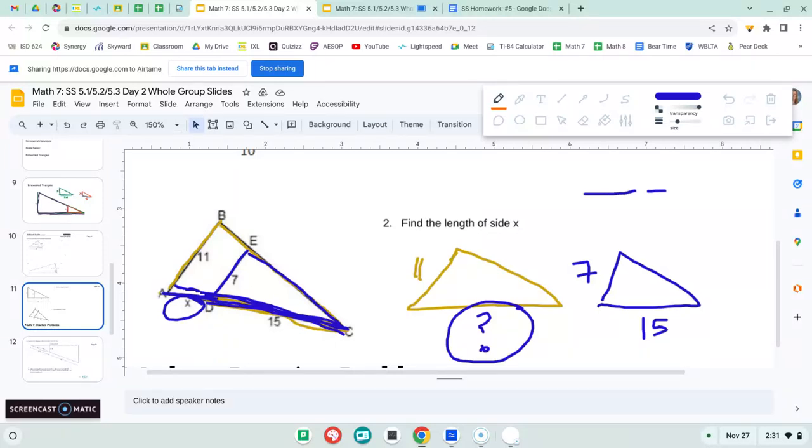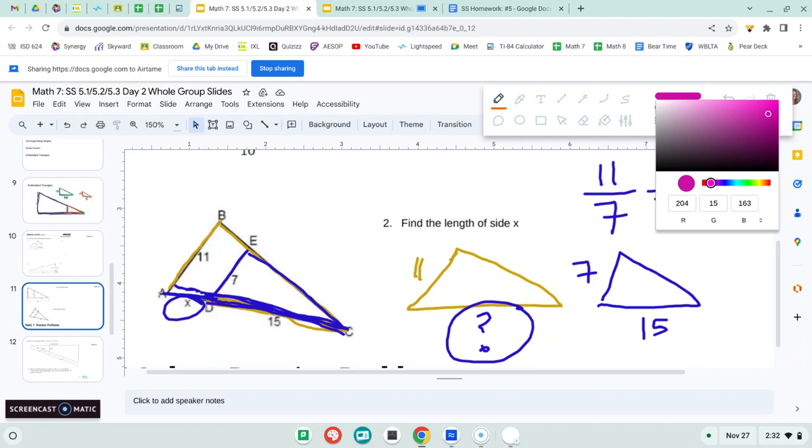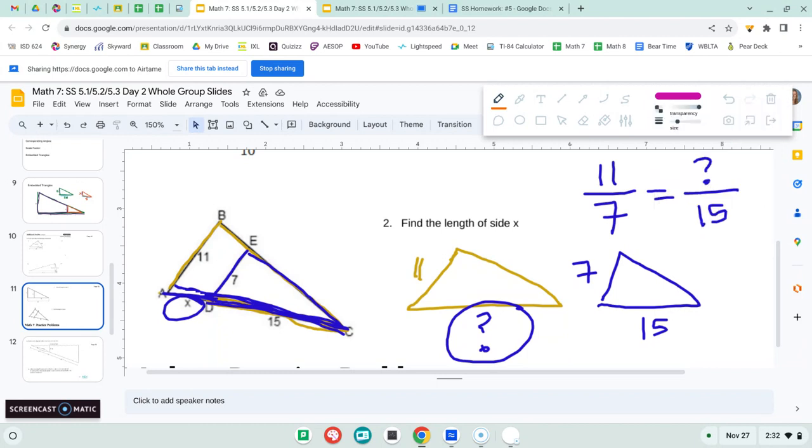So when I set up this proportion, I do 11 and seven because I know those corresponding sides. And then I know question mark in 15. So when I cross multiply, I end up with not a good answer, but that's okay. This full length here ends up being about 23.6.